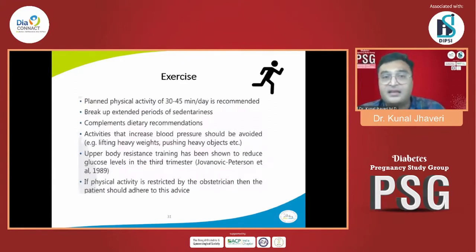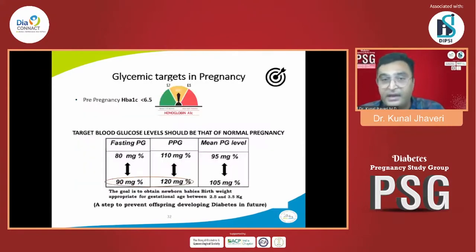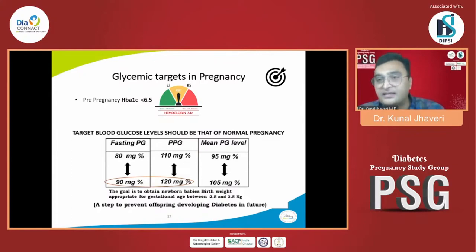For exercise: 30 to 45 minutes per day is required; break up extended sedentary periods; activities that raise blood pressure significantly like lifting heavy weights or pushing heavy objects should be avoided. Unless the obstetrician requires physical activity restriction, exercise should be maintained. Targets: pre-pregnancy HbA1c less than 6.5; during pregnancy, fasting plasma glucose of 90, postprandial of 120, and mean average of 105 per DIPSI guidelines. Don't worry excessively about hypoglycemia during pregnancy due to natural hormonal balance. Baby weight should be between 2.5 to 3.5 kg.